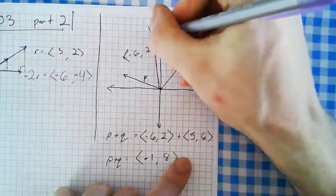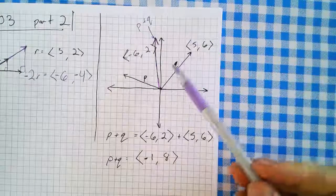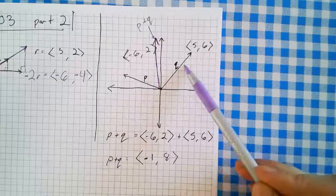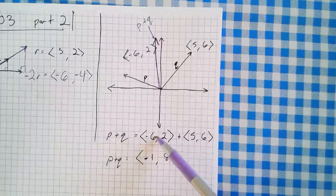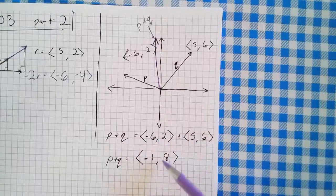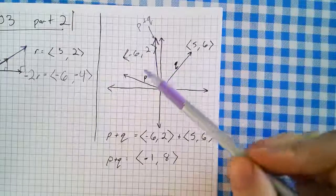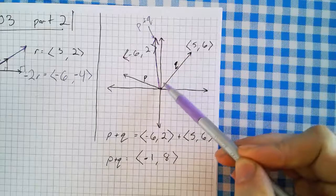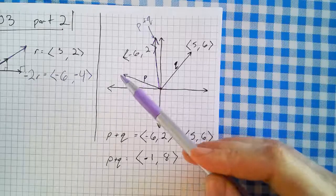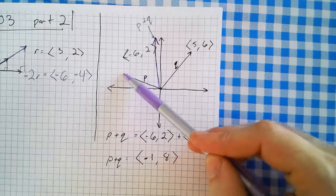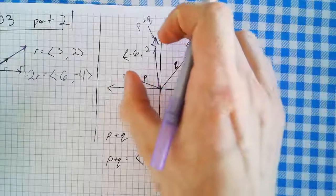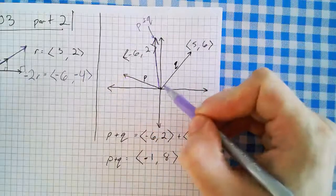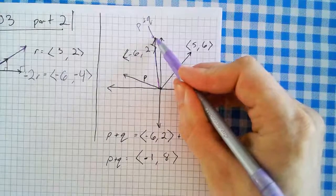I've got this purple vector p plus q at (-1, 8). It might not be obvious how you add two arrows and get this arrow. Mathematically, you add the x and y components. But geometrically, you can see it: take the tail end of q and move it to the leading end of p. When you shift vector q so its tail is at the tip of p, you end up right at the point p plus q.